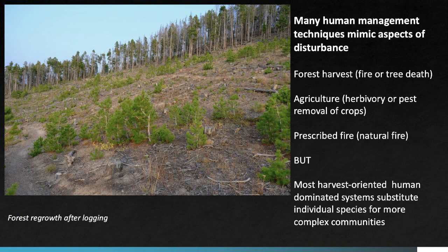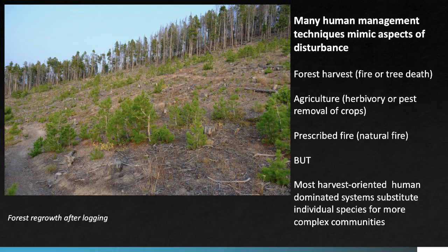Disturbance is similar in many ways to human management activities of plant and animal communities. The image here shows an area of deliberately cleared forest whose impacts have some similarity to what would happen after fire or another type of tree death — in this case, trees were removed to reduce the likelihood of fire crossing the ridge into a nearby neighborhood. Many agricultural techniques have similarities to herbivory. One big difference, however, is that human-managed plant communities often have much reduced biodiversity relative to their natural counterparts — sometimes just a single species of tree or crop periodically harvested for food or fiber.